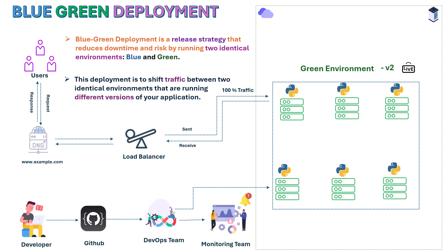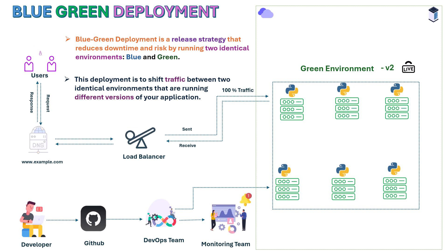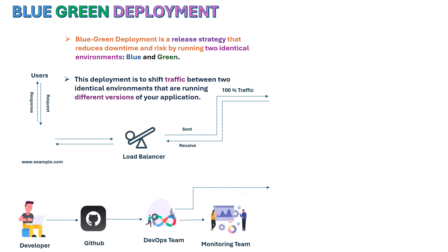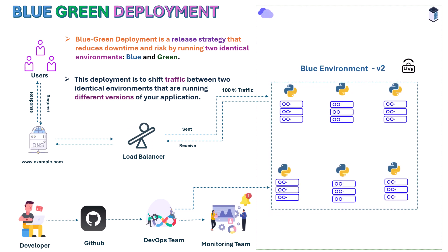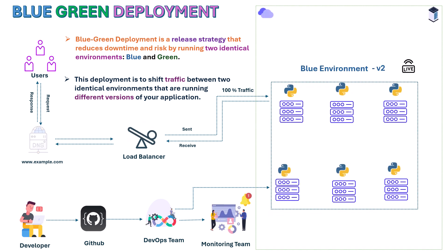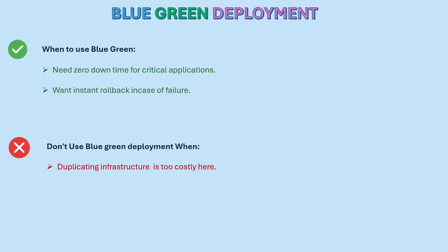If everything works well, the blue environment is taken down and 100% of the traffic is directed to the green environment, which is running version 2. Now the green environment is live, and green becomes the new blue running version 2.